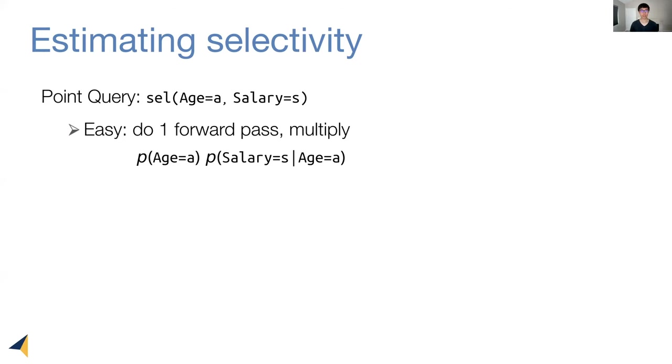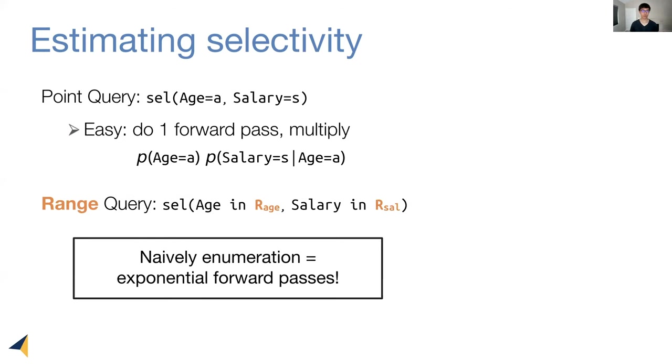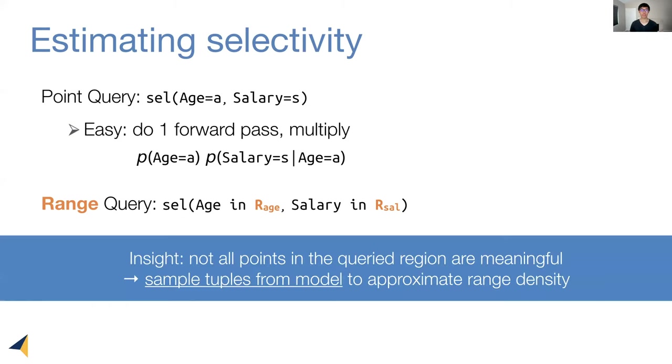The more challenging task is to handle range queries. For instance, we want to return the selectivity of age in some region R_A and salary in some other region. Naively enumerating all possible points in this query region incurs an exponential cost. To solve this problem, Naru uses the insight that not all points in the query region are meaningful. Therefore, we shouldn't need to enumerate all of them. Instead, we should sample tuples from the model, and Naru uses these sample tuples to approximate the range density or selectivity.